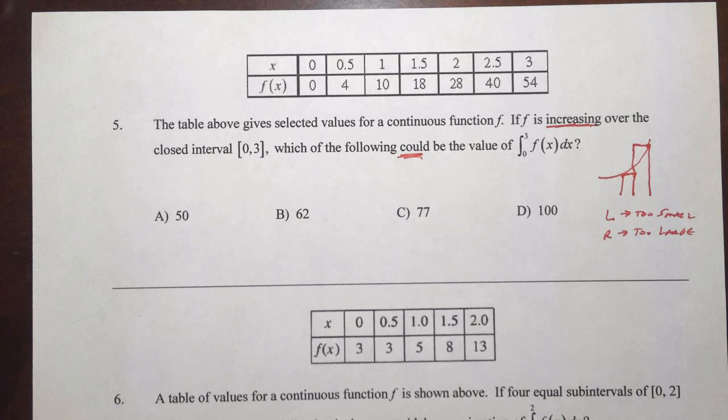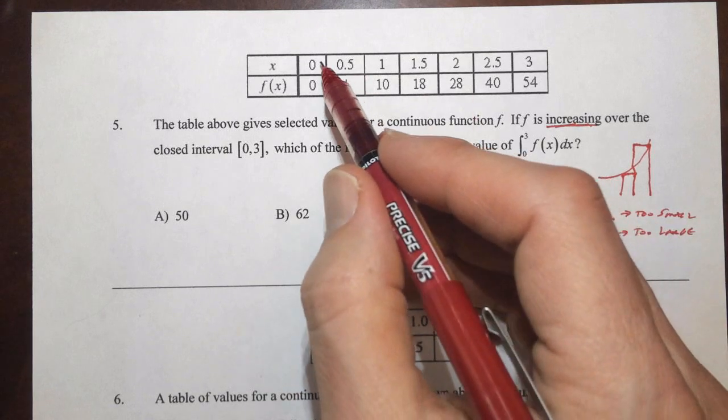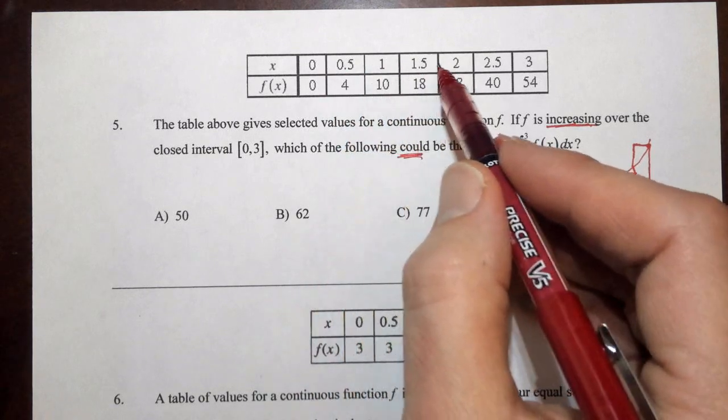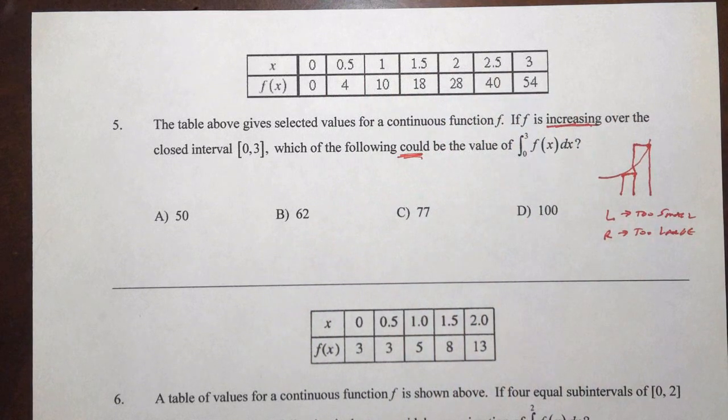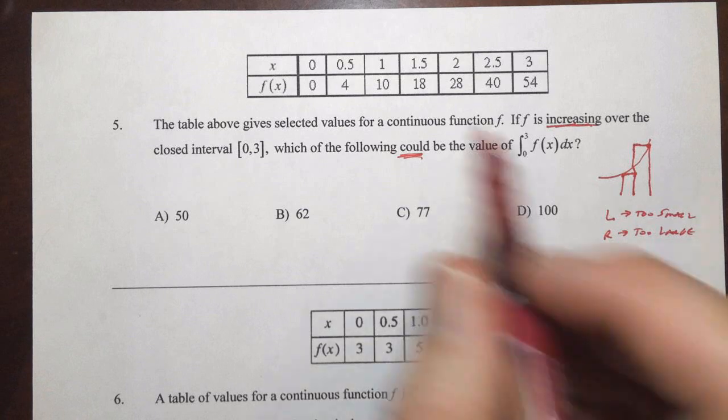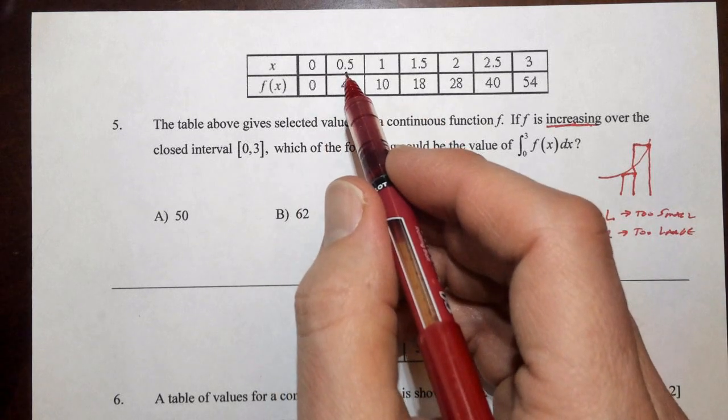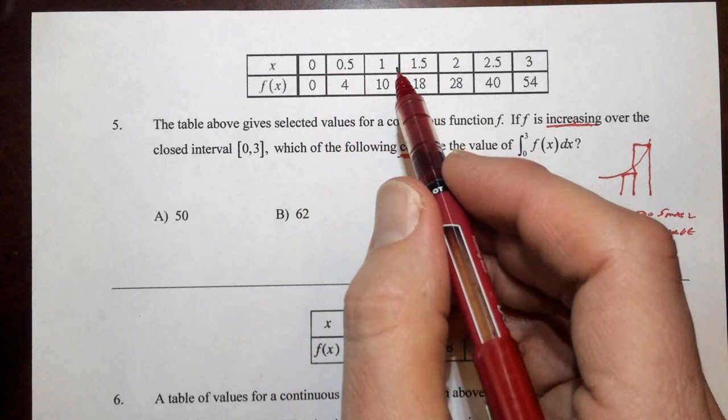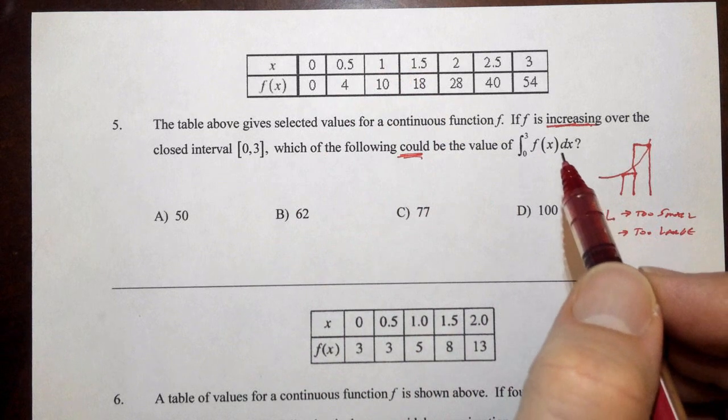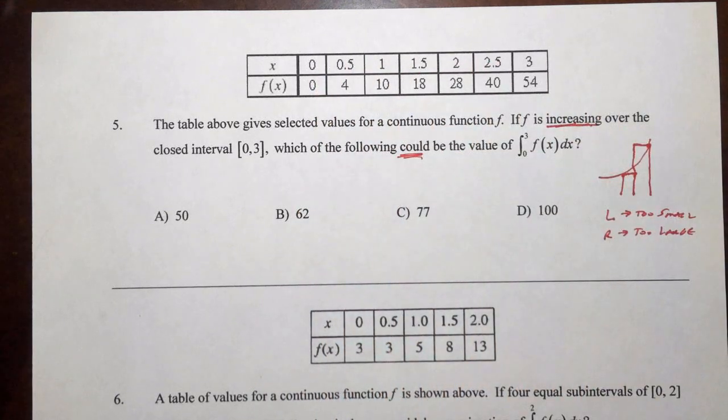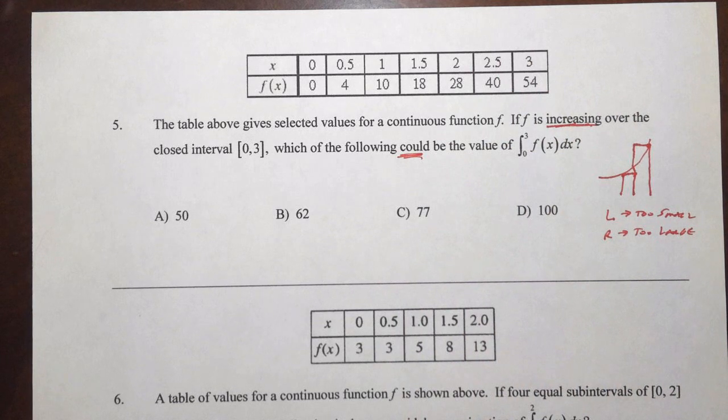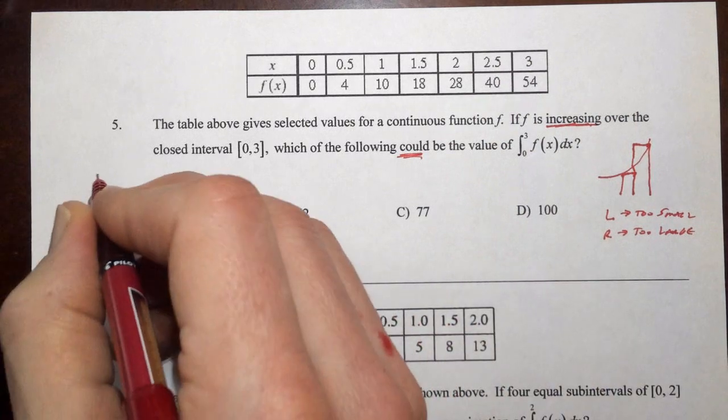Now, it doesn't say how many subintervals there are, and we have one, two, three, four, five, six. We have the ability to do six subintervals, and each one would be half of a unit. So we can be that exact. You could probably go a little less exact and maybe go every one unit and come up with a value there, which may work. But let's just be thorough. Let's go every half unit. So for our left sum...